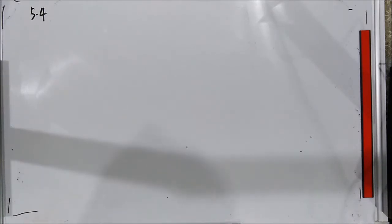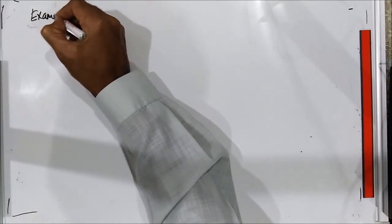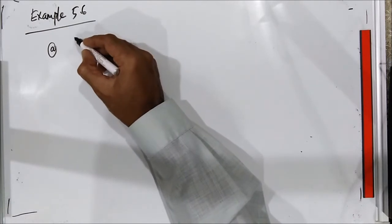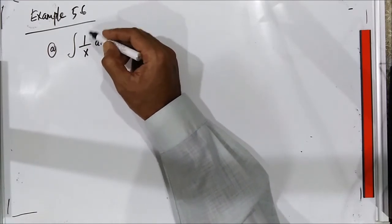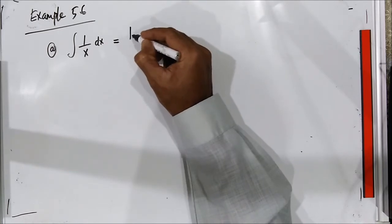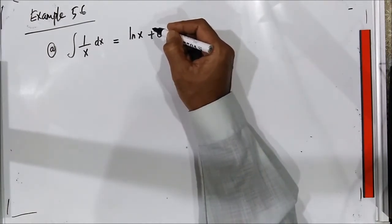Now we go to Example 5.6. For part A, we have the integration of 1 over x. Here you don't have to use U-substitution because this is a straightforward integration. The integration of 1 over x gives log|x| plus C. This is a direct integration; you don't need U-substitution.